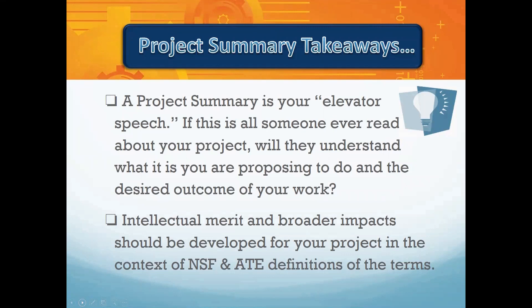When addressing intellectual merit and broader impacts, please be sure to understand what NSF means by those terms. There's criteria provided in the request for proposals and the PAPPG. You do not have to address all the criteria listed by NSF, but you should plan to align with at least some of what has been provided to prospective grantees. The statement on intellectual merit should describe the potential of the proposed activities to advance knowledge. The statement on broader impact should describe the potential of the activity to benefit society. Some examples from the RFP: does the project have the potential for improving student learning in science or engineering technician education programs? Will the project's results be widely disseminated? Be sure to pay close attention to these when crafting your intellectual merit and broader impact statements.